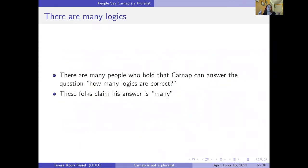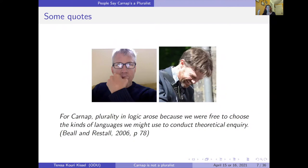Lots of people do claim that Carnap is a pluralist — they think when presented with the question 'how many logics are correct,' he has to answer 'many.' Greg and JC say: 'For Carnap, plurality in logic arose because we were free to choose the kinds of languages we might use to conduct theoretical inquiry.' Roy Cook says 'Carnap's view certainly amounts to a form of logical pluralism.' Jillian Russell, in the SEP article, says 'one of Carnap's reasons for accepting logical pluralism is that he saw it as making space for innovation in logic.' None of these authors get the motivations wrong — we just can't label Carnap as a pluralist in the end.